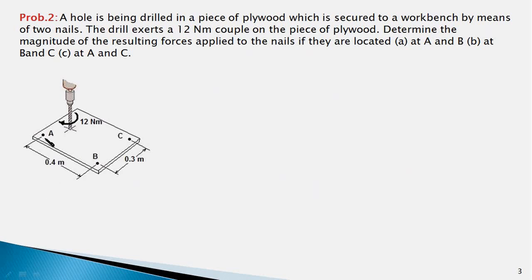In this problem, a plywood piece is secured to a workbench by two nails at points A and B. A drilling machine imparts a couple of moment 12 newton-meters in the clockwise direction. We have to find the forces acting on the nails. This moment tries to rotate the plywood clockwise, and its motion is obstructed by the two nails.